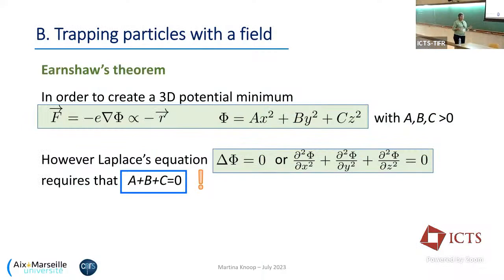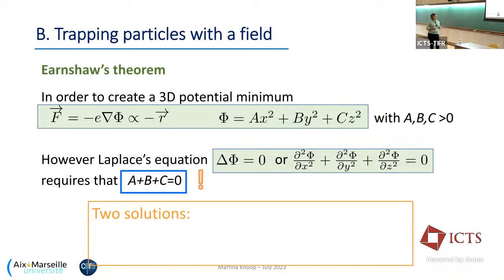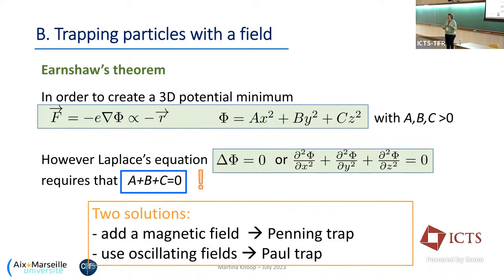Let's start with the real physics of the traps. You may have heard about Earnshaw's theorem, which says that with only electrostatic fields you cannot trap charged particles, because if you want to create a 3D potential minimum you have to fulfill certain conditions, but taking the Laplacian shows that the parameters must sum to zero, which they cannot for such a potential. So you have to work around this theorem.